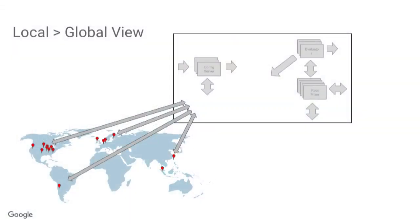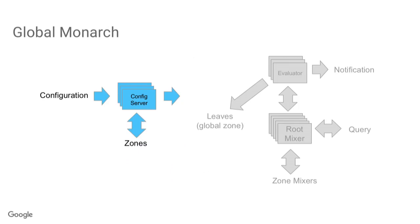But Monarch is a global service. Zones are integrated into a single system by global Monarch, which is logically centralized — the place the user interacts with Monarch as a global system — but physically distributed. It provides a global view of what's going on in the zones and machinery for users to configure how the whole of Monarch acts for them. Configuration lives in a config server sitting over top of Spanner — the same Spanner available in Google Cloud — and is replicated to zones so they can operate independently. Users can configure what they're collecting, retention duration, downsampling, target schemas, evaluator queries, console definitions, and more.